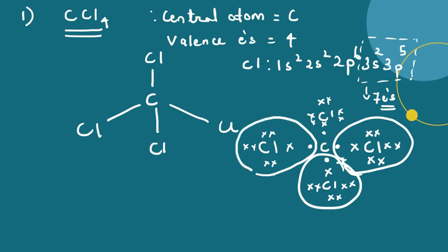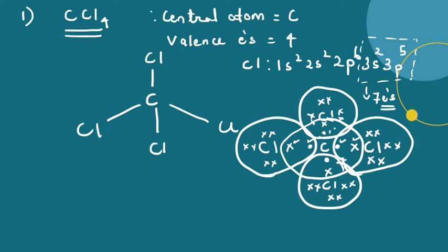Each chlorine has 8 electrons around it, so the octet is complete for each chlorine. For carbon, we count the shared electrons from all four chlorine atoms: 1, 2, 3, 4, 5, 6, 7, 8 — 8 electrons surrounding carbon. So the octet for carbon is also complete. In this way we can represent the Lewis dot structure for CCl4.